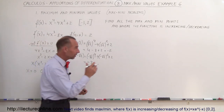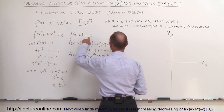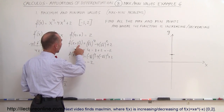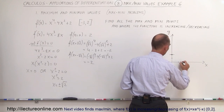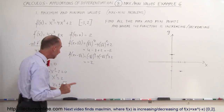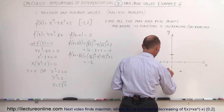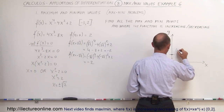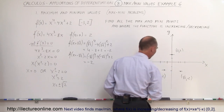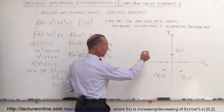Now we have the three points where the slope equals zero. Graphing them: the first point is (0, 2), the second is (√2, −2), and the third is (−√2, −2). Those are the three critical points where the slope is zero. It doesn't quite reveal the full shape of the equation yet, but as a hint, any x-to-the-fourth equation typically looks like a 'W'. Now we're going to evaluate the function at the end points, because those may be higher or lower than the maximum values we found.